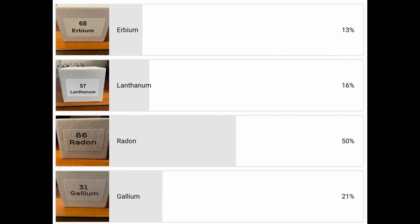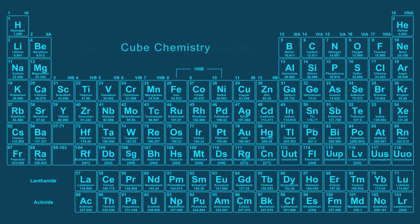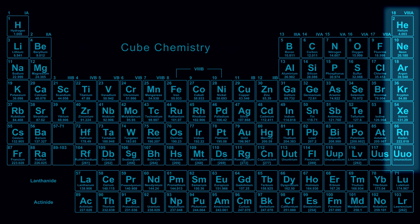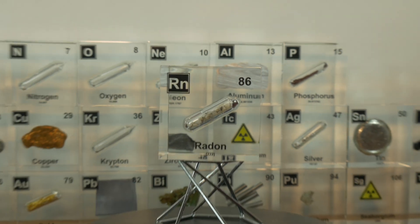Two weeks ago we did a poll about which element you want us to discuss and you chose radon. Now radon is one of the most intriguing elements of the periodic table. Radon is a noble gas with the canonical symbol Rn and atomic number 86. Despite its simplicity and appearance being colorless, odorless and tasteless, it is anything but ordinary.